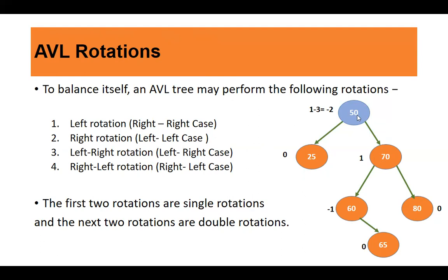To remove imbalance and make it a perfect AVL tree, you need to carry out some rotations. You have four types: left rotation, required when insertion is carried out right-to-right; right rotation, when insertion is from left-to-left; left-right rotation; and right-left rotation. The first two — left and right — are single rotations, but left-right and right-left are double rotations. We will look at all of them one by one.